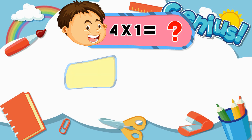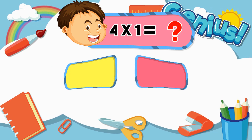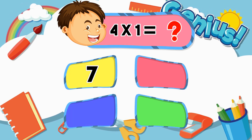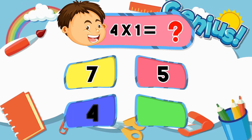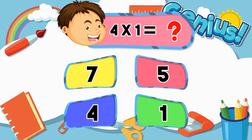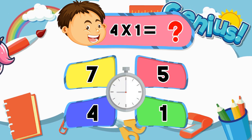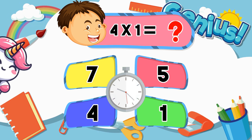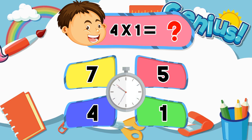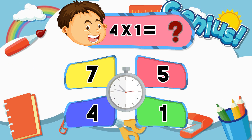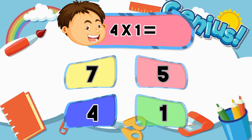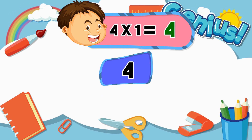What is 4 times 1? Seven. Five. Four. One. Correct answer: 4.